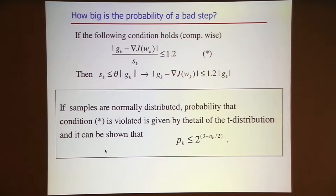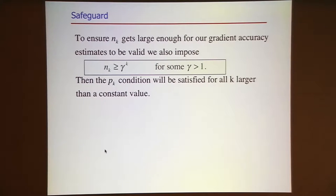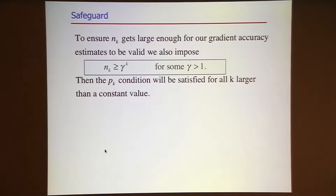I'm going to have to grow the sample size exponentially to make sure that the gradient accuracy condition is satisfied. To ensure the sample size gets large enough, we need to impose that in practice if the sample size is not growing at least exponentially, I force it to grow exponentially. I can make this constant very small—very conservative—so I have a very slow exponential behavior that would only be active if my variance conditions are not sufficient.